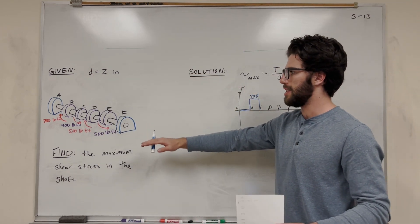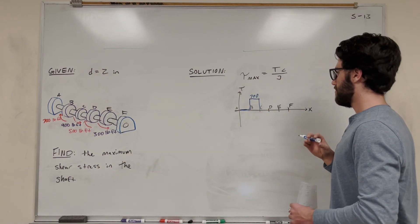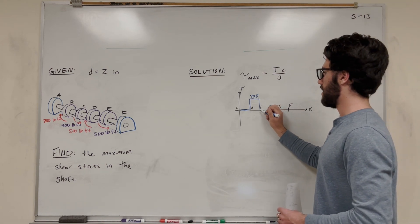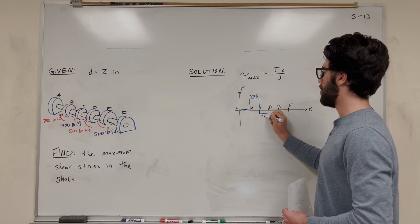Then we get to C, and what happens at C? We have this 900 pound-foot torque acting in the opposite direction. So we're going to need to subtract 900. So 700 minus 900 gets us down to negative 200.